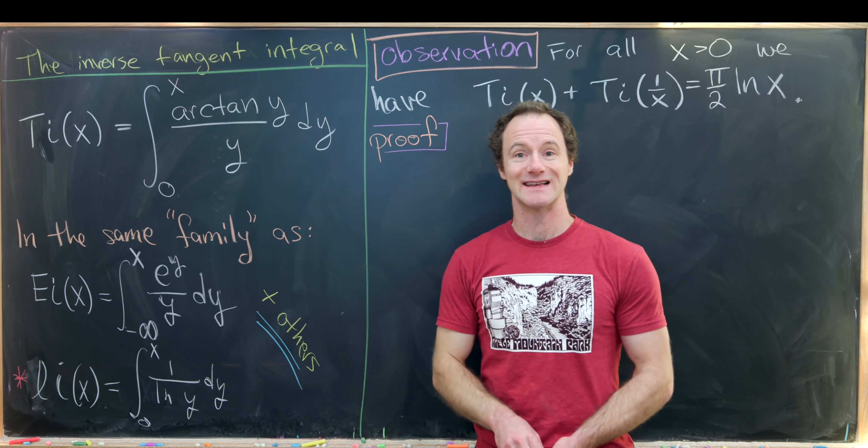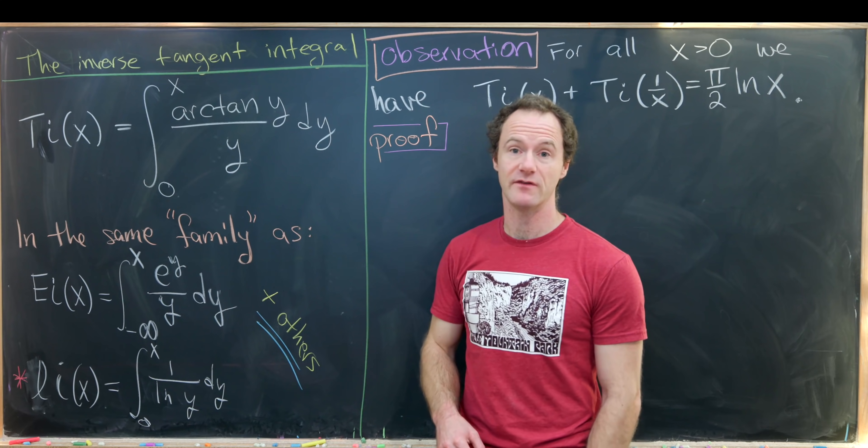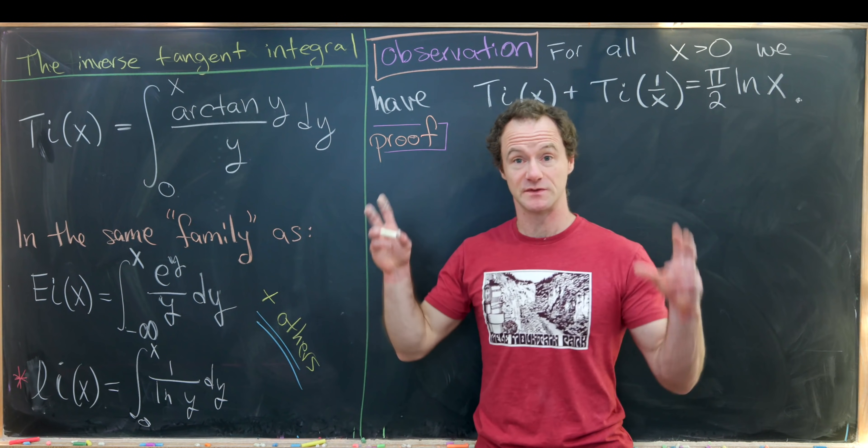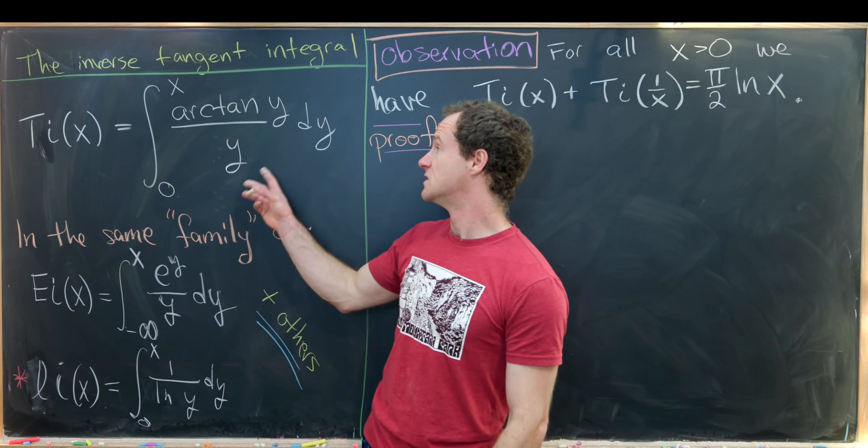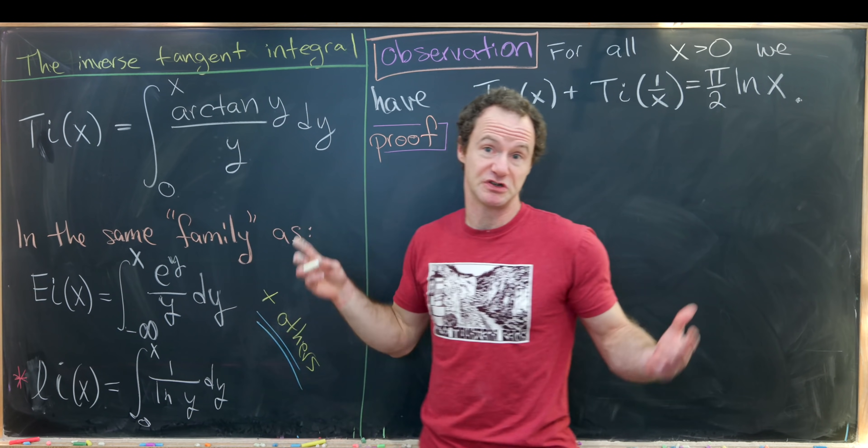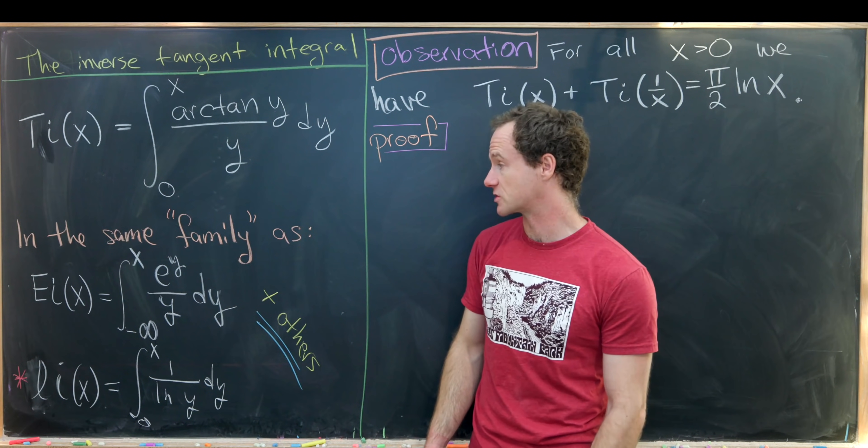is the integral from 0 to x of the inverse tangent of y over y dy. This arctan y over y has a non-elementary antiderivative, and so that means that we can't express it in terms of elementary functions. So the best way to express its antiderivative is via just a new function, which we call the inverse tangent integral function.